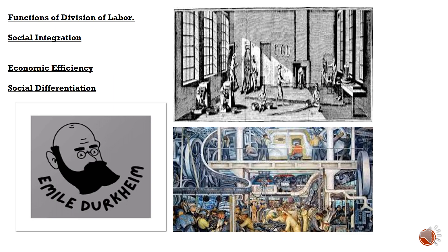Durkheim has also analyzed the functions of division of labor. The first is social integration. Division of labor plays a crucial role in fostering social cohesion and solidarity by interconnecting individuals through specialized roles. When individuals perform diverse tasks and rely on each other for goods and services, they develop a sense of mutual dependence and collective identity. For example, in a community where people have distinct occupations but collaborate for common goals such as farming or trade, division of labor strengthens social bonds and promotes unity.